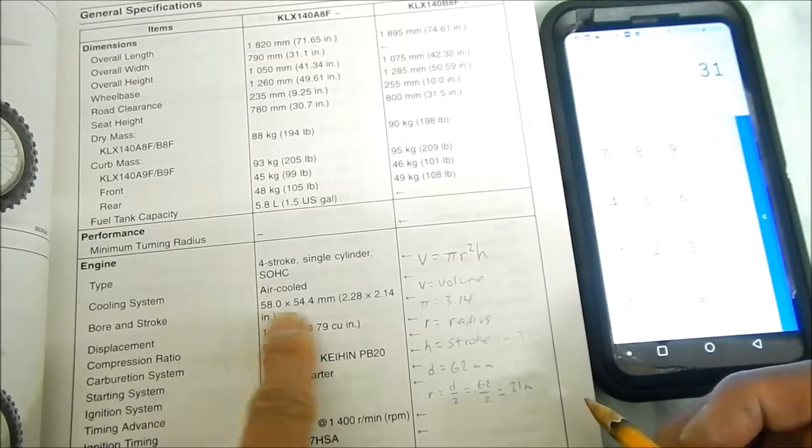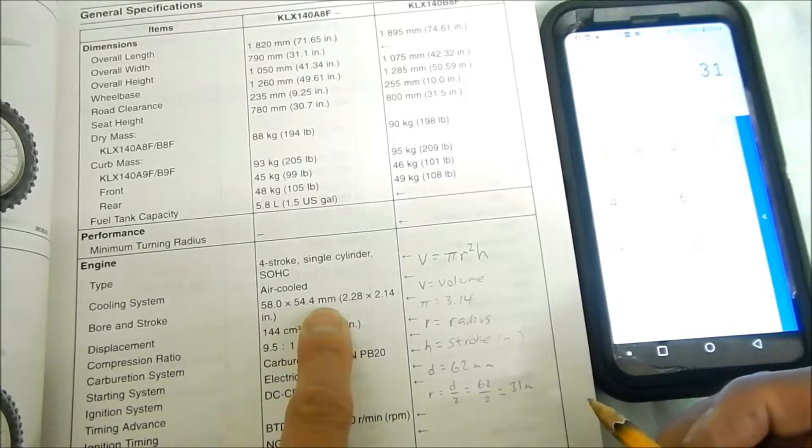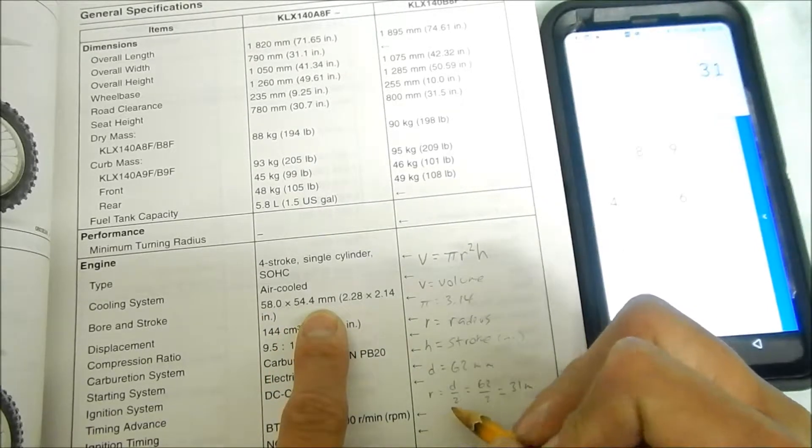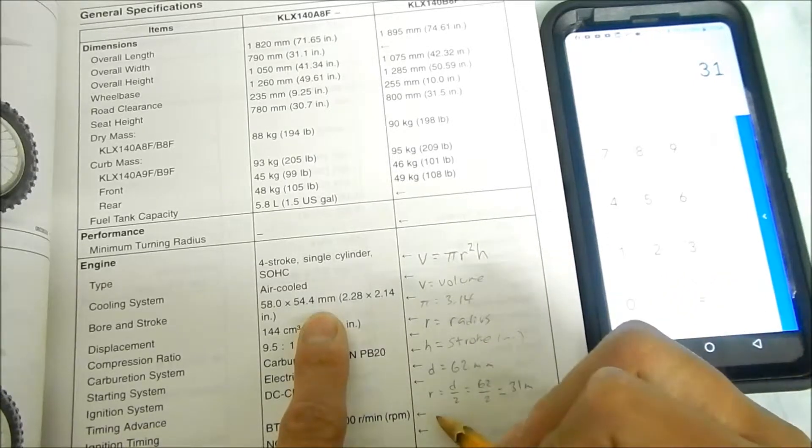And then we found our height is right here. Bore and stroke is height, 54.4, so our h is 54.4. It's the stroke.